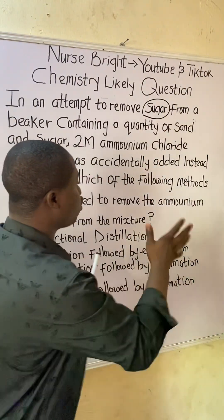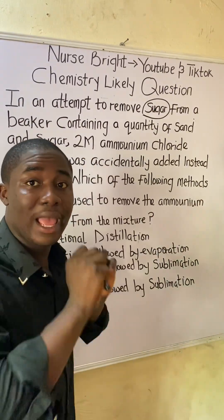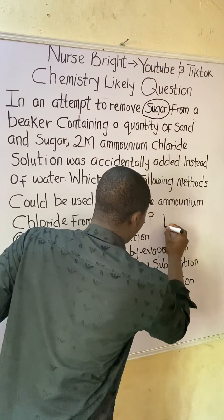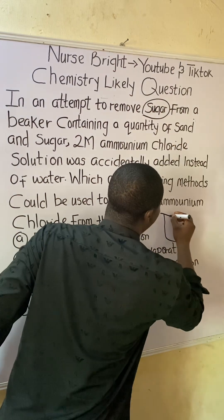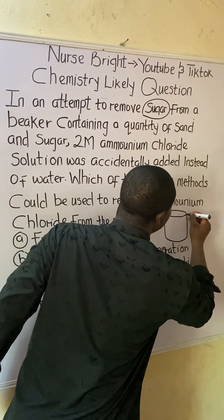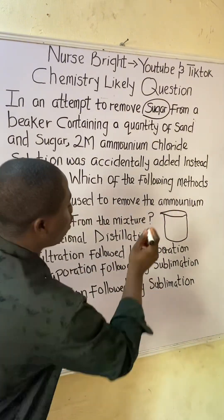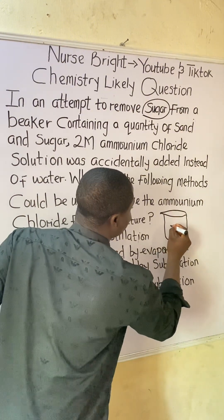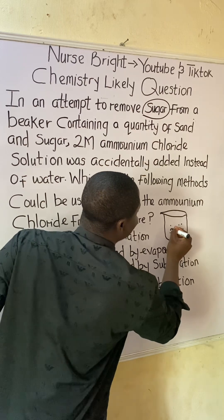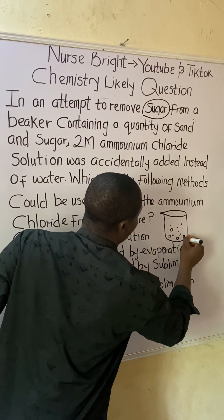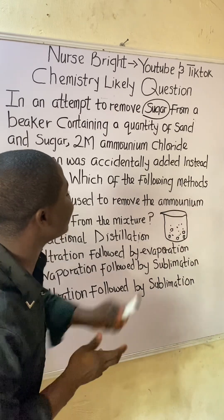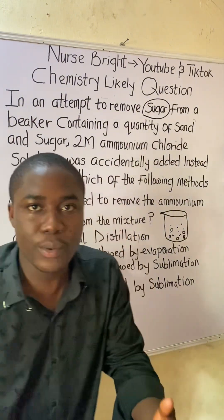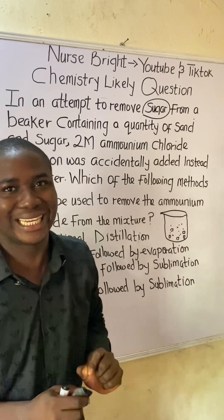Here is how a beaker looks. A beaker is an instrument used in the laboratory. They told us that sugar and sand were inside this beaker. Let's take this to be the beaker. Inside this beaker we have a mixture of sugar — let's use dots for sugar — and the squared substance represents the sand. So inside this beaker we initially have a mixture of sand and sugar together, and we are trying to remove the sugar.